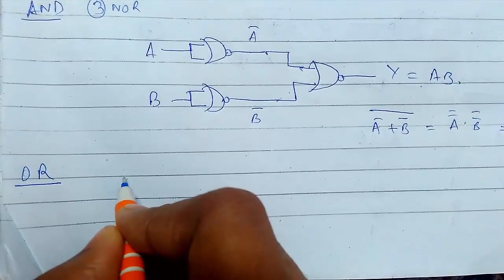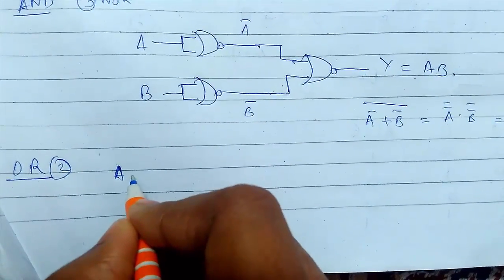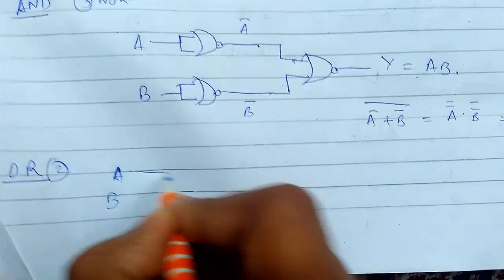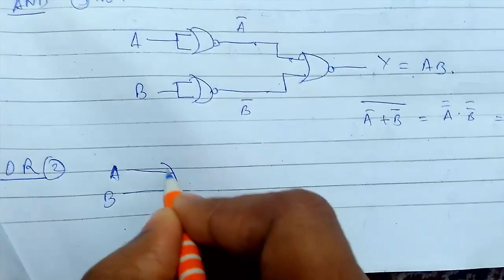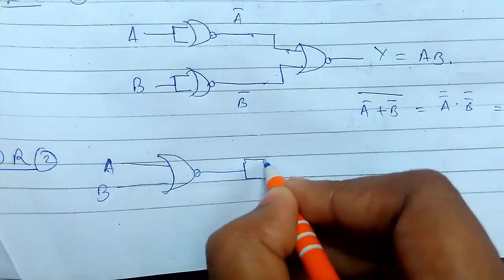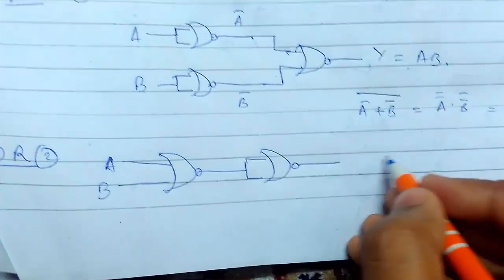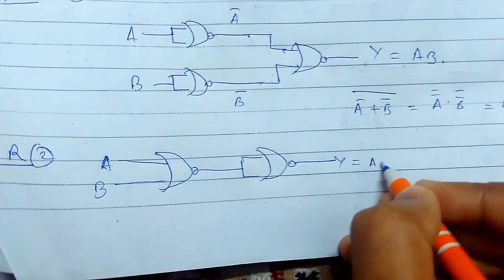For finding OR gate we need two NOR gates. This is simple. You take like this the NOR gate and just pass it again twice. So you get the OR result.